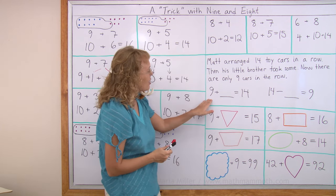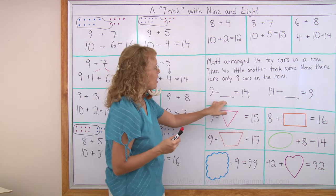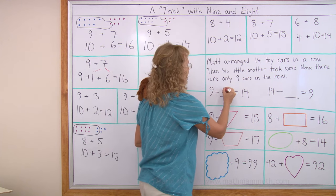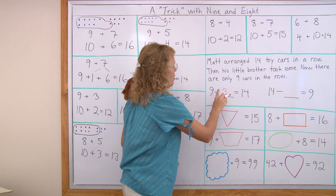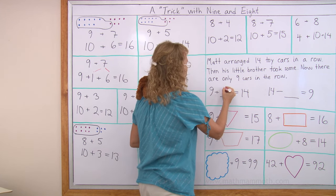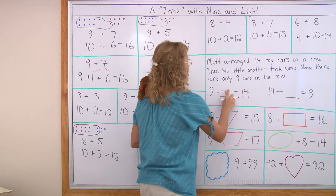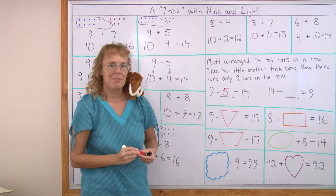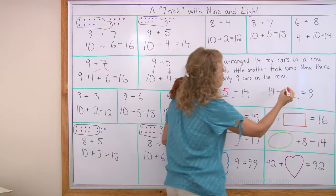And this one you can solve by thinking of the 9 trick. 9 plus how many more makes 14? You can even just guess. Guess 3. Will 3 work? 9 plus 3? No, that makes 12. 9 plus 4? No, that makes 13. 10 and 3. 9 plus 5? That works. Because it makes 10 and 4. Yes. So the answer here would be 5, too.